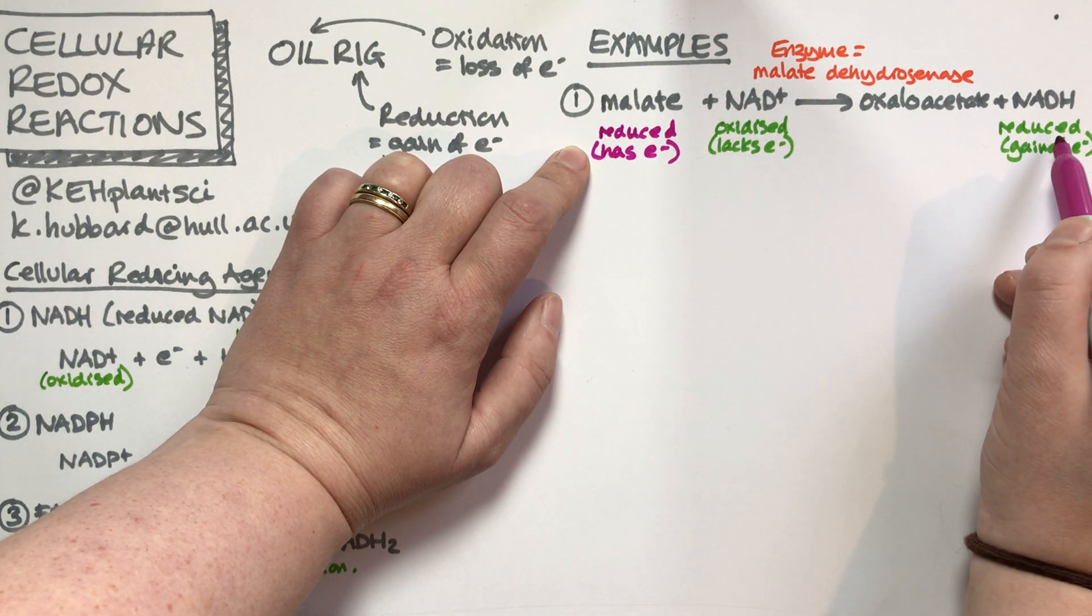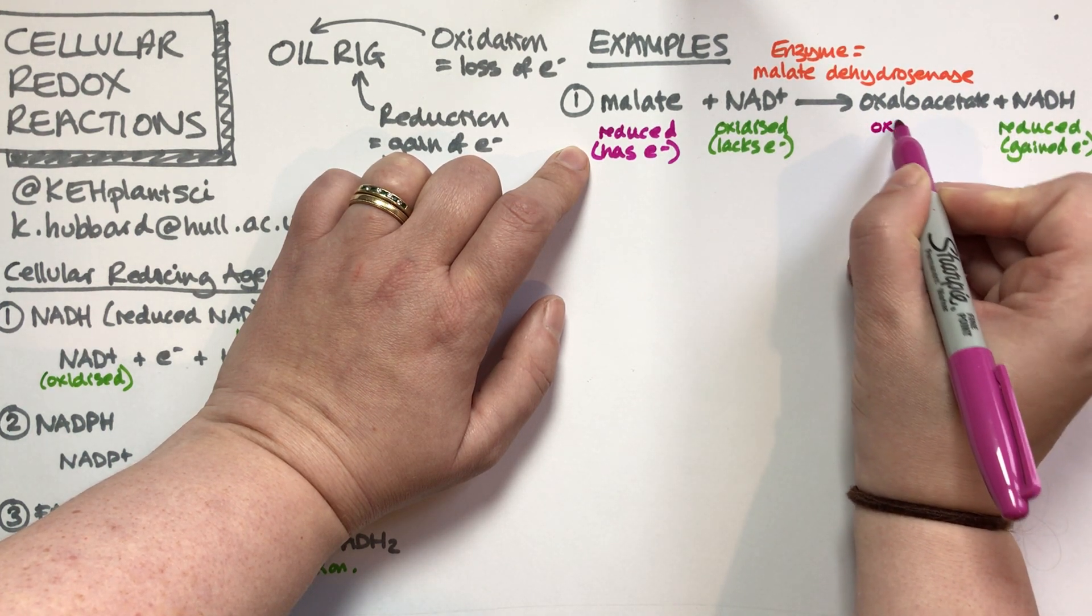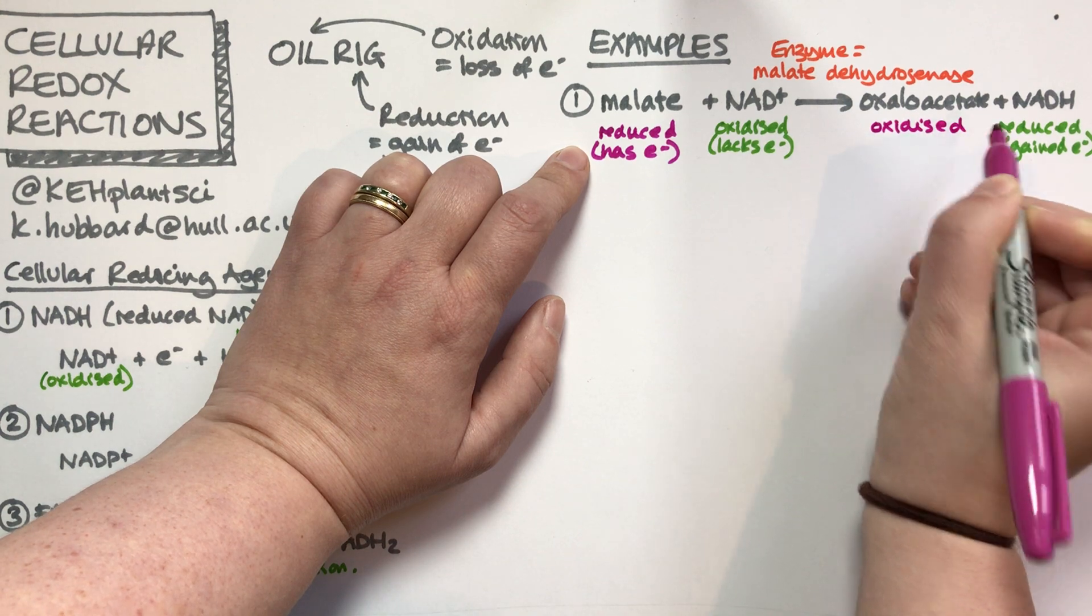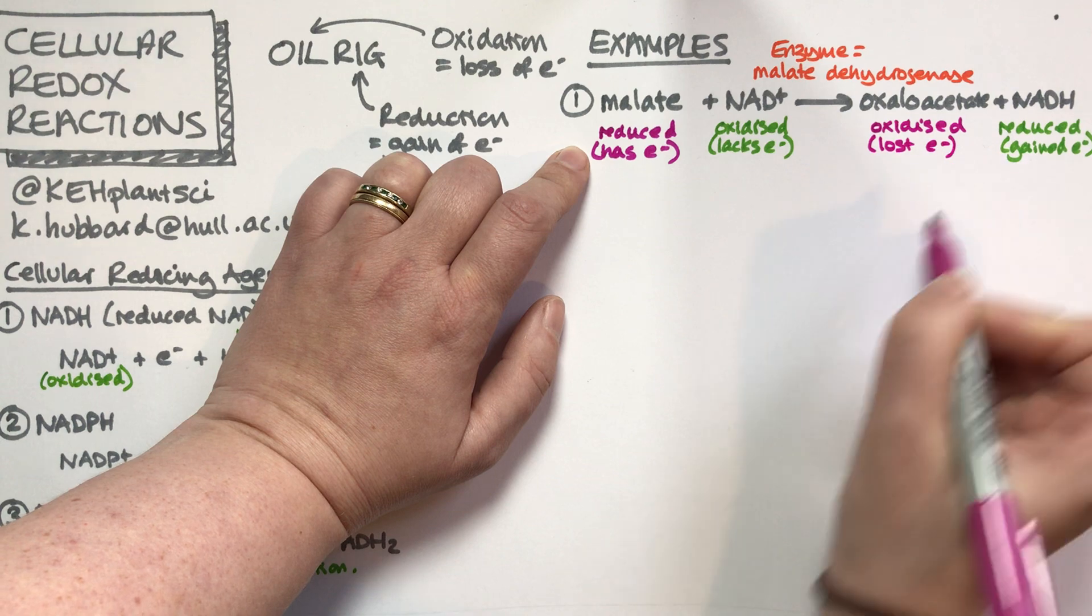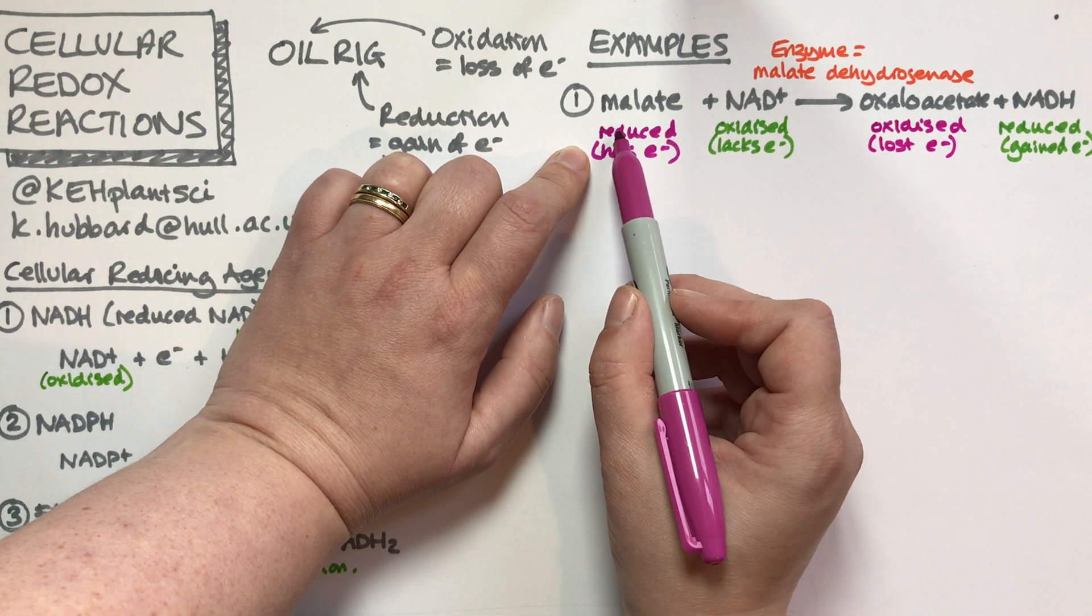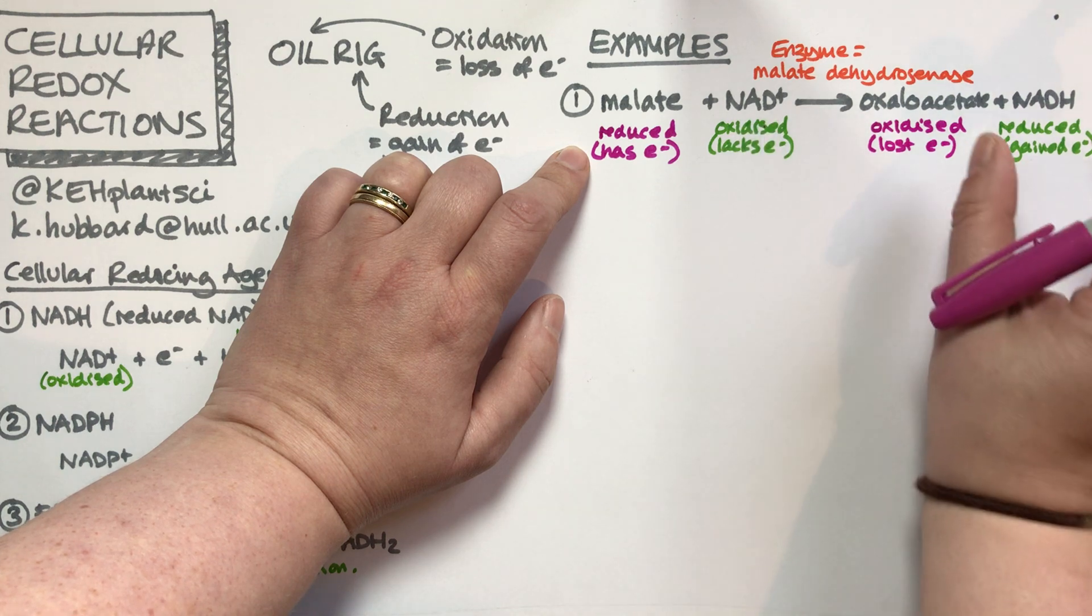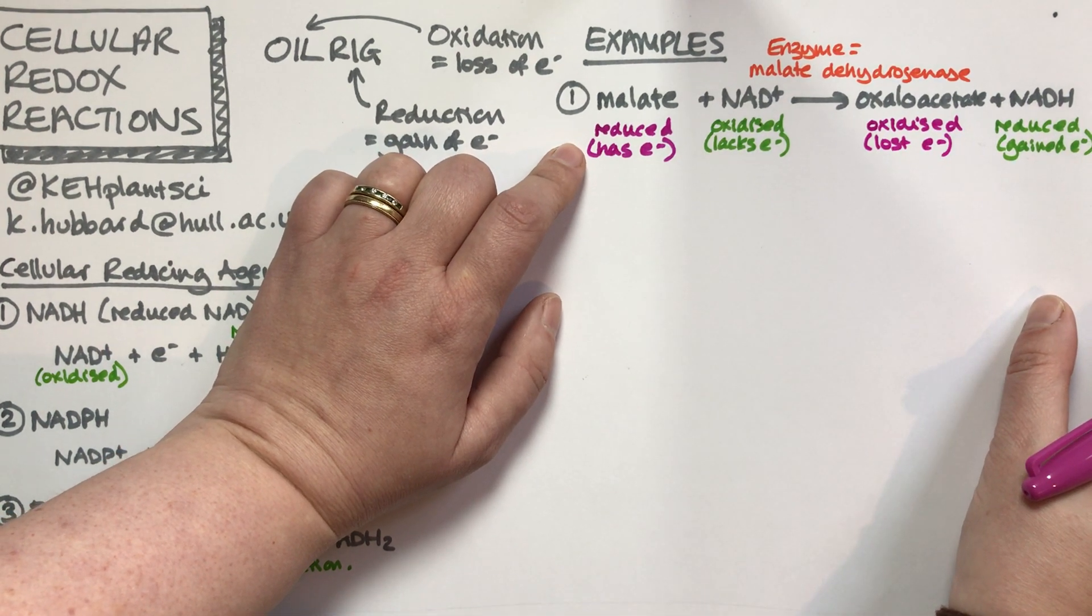NAD becomes the reduced form NADH, and malate becomes the oxidized form oxaloacetate, which has lost some electrons. These reactions always go in pairs. One thing starts reduced and the other starts oxidized, and they flip in the reaction as we transfer the electron.